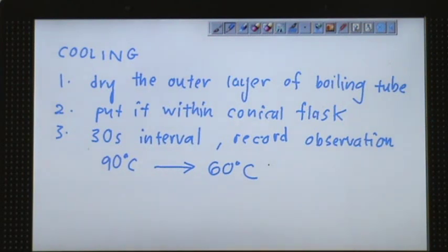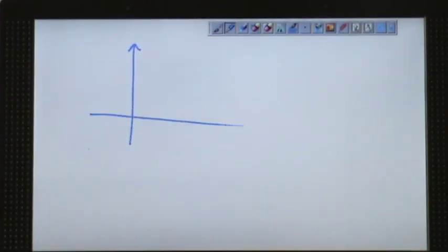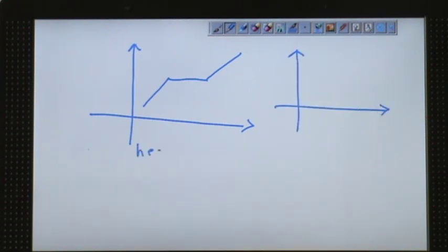When you get all the results, you plot them into a graph and the graph will look something like this. We need to explain why is it like that for heating and why is it like that for cooling. We make some inference and do some discussion and find out the conclusion of the whole heating of naphthalene. We'll explain this in another video. Thank you.